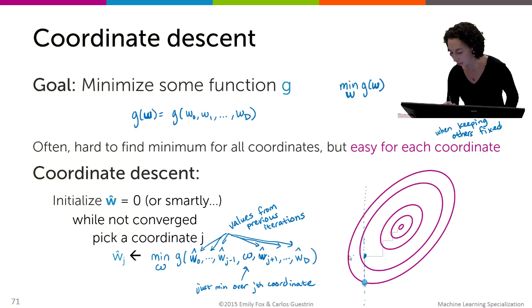And then what I'm going to do is, in this case, just going to cycle through my coordinates. I'm next going to look at keeping w1 fixed and optimizing over w0. And here was the minimum. I'm going to drop down to the minimum, which is here. And I'm going to optimize over w1, holding w0 fixed to this value. And I'm going to keep taking these steps.